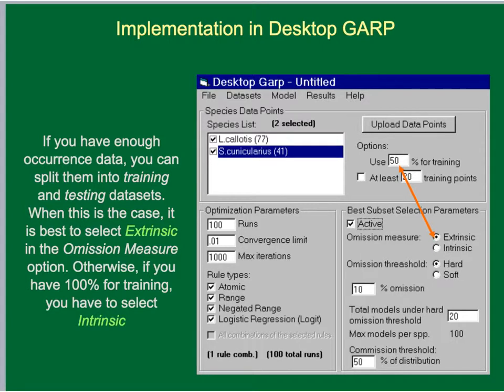If your sample size is small — for instance, you have a species of conservation concern with few known records or a low sample size — you can select the intrinsic option and let GARP perform some internal model evaluation.